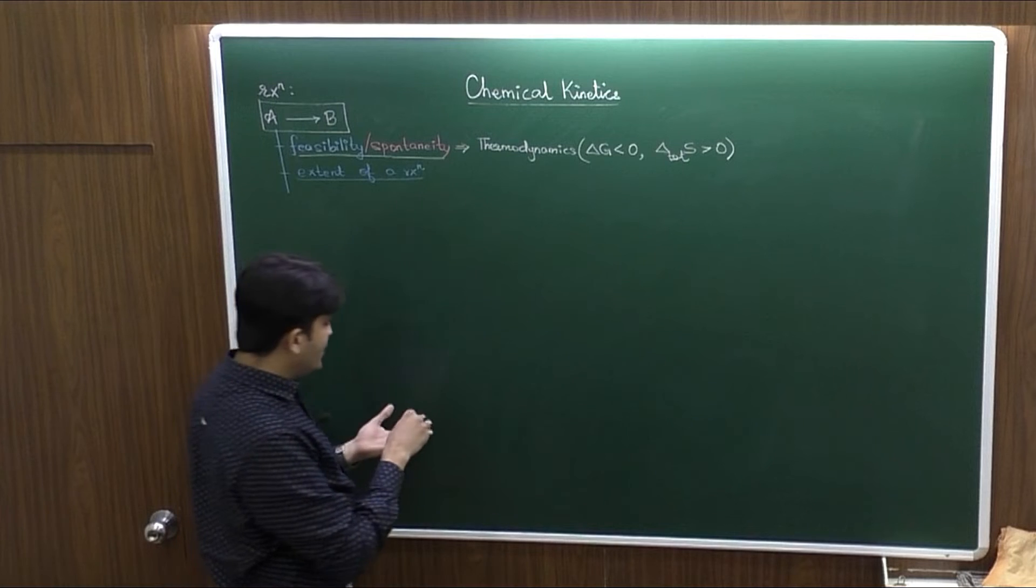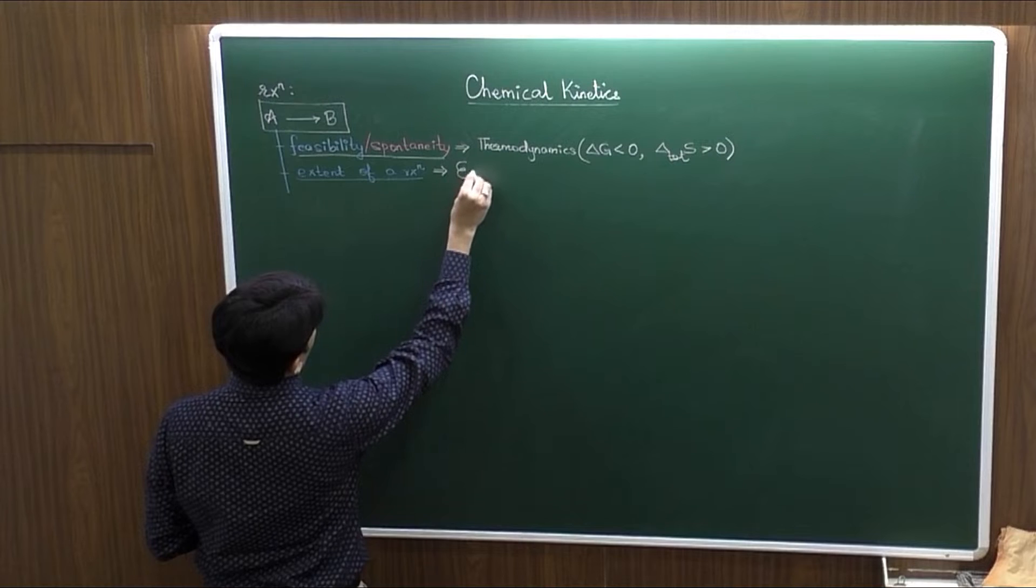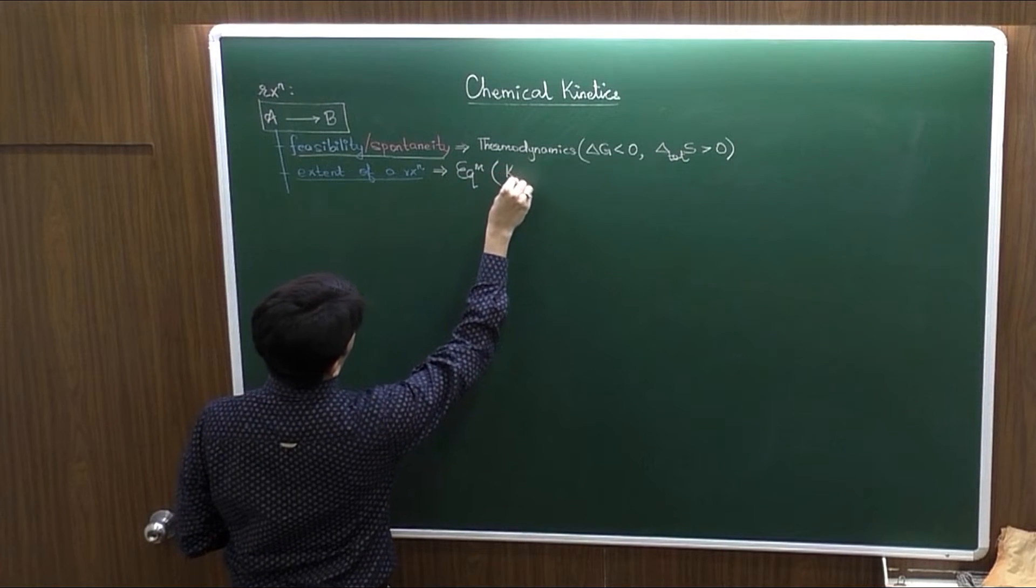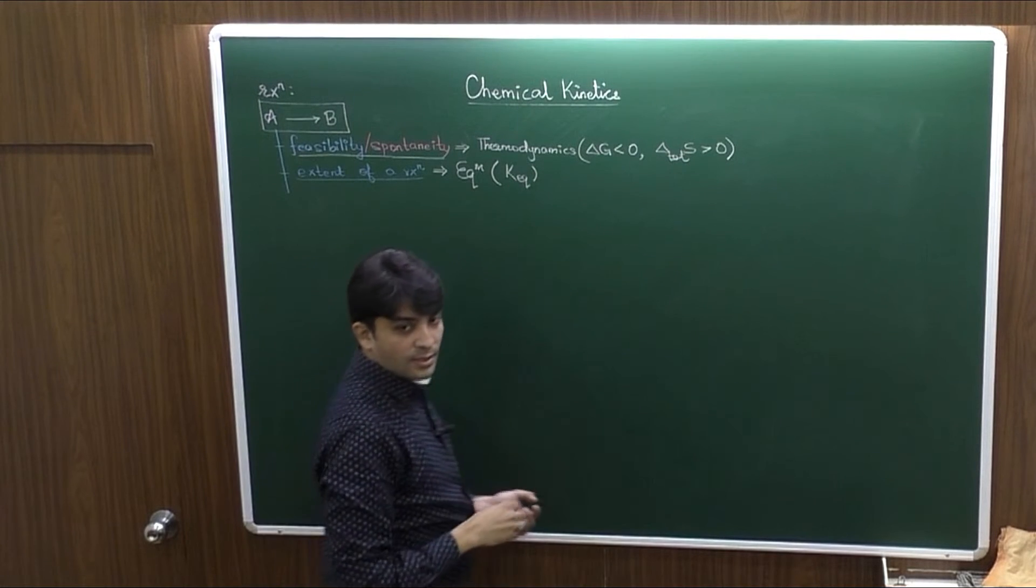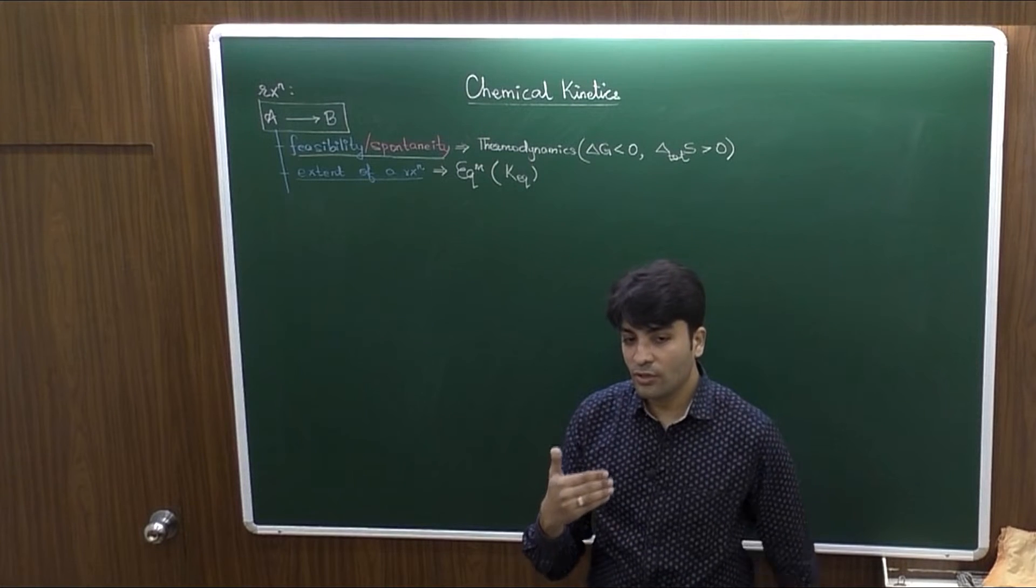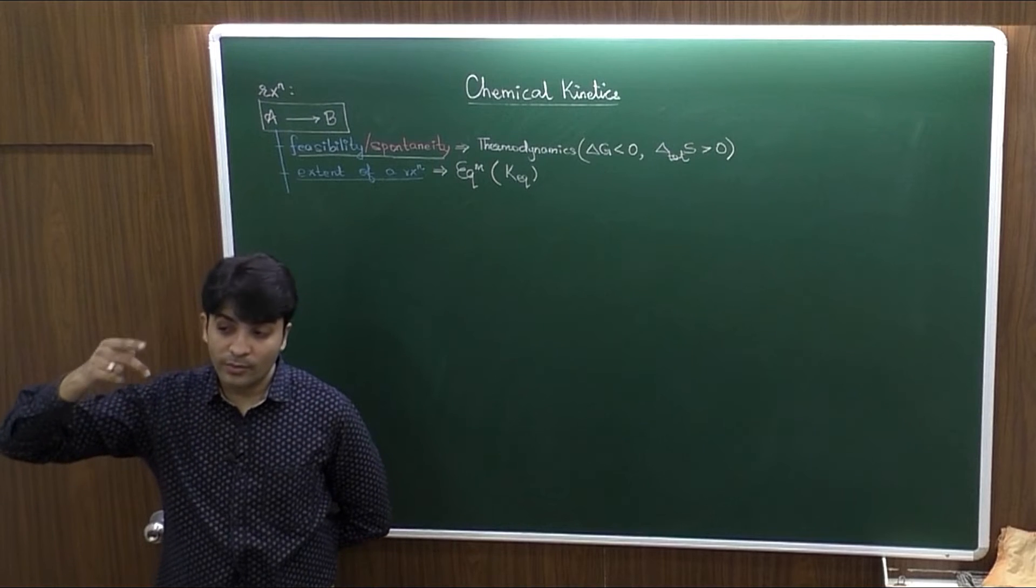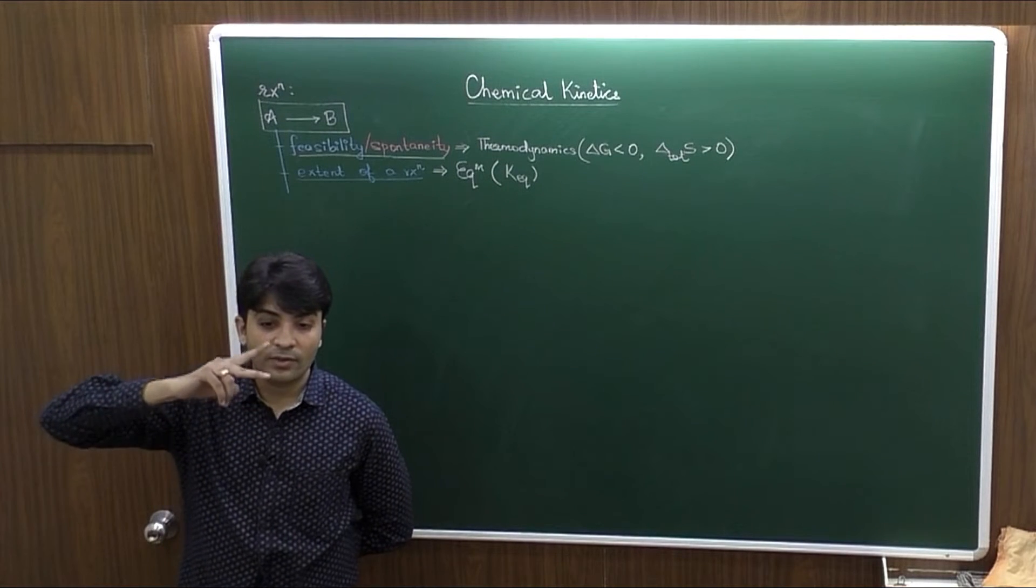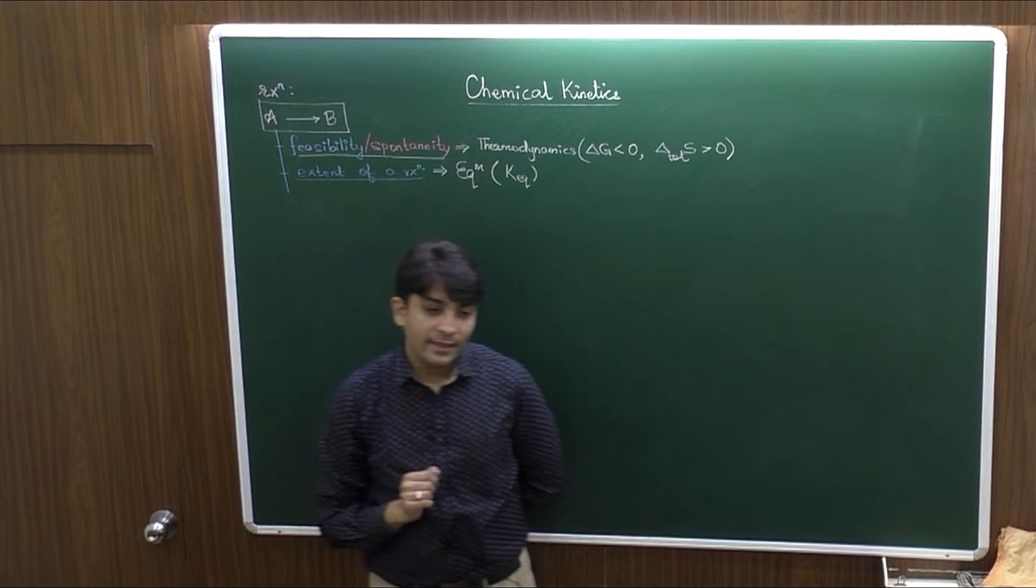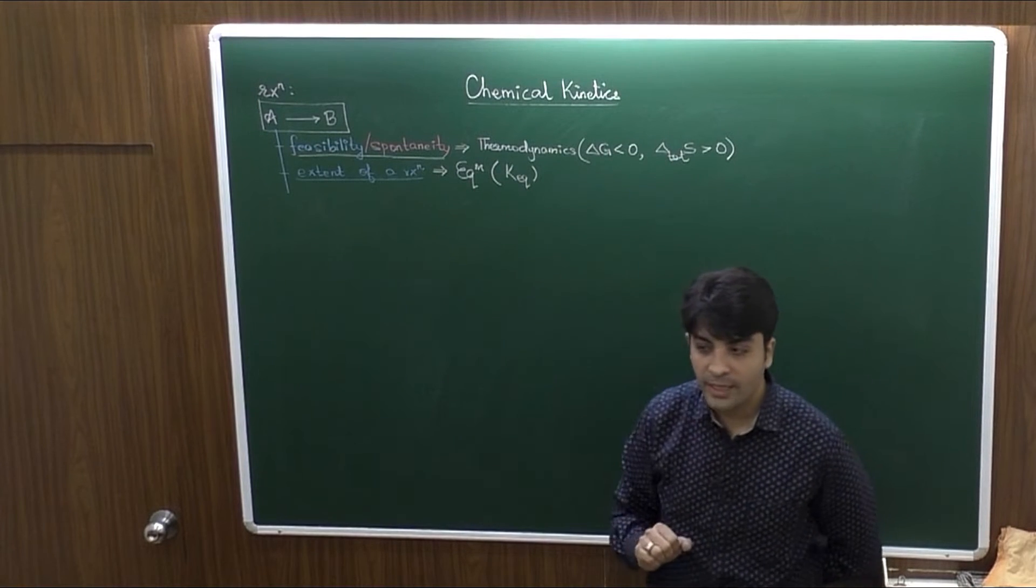And for the reversible reaction, this extent can be found or calculated by Le Chatelier's principle and by a parameter that is equilibrium constant. Higher the equilibrium constant, higher will be concentration of the products. Equilibrium will be shifted to the right side and there will be more formation of the products.